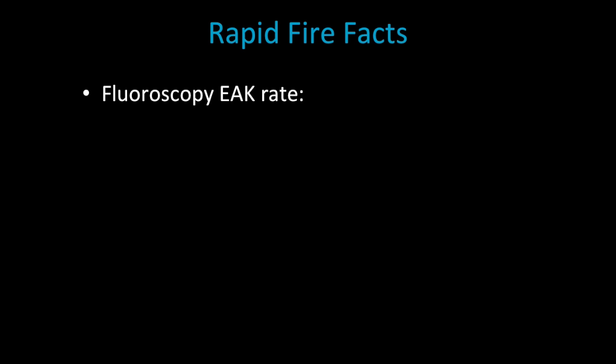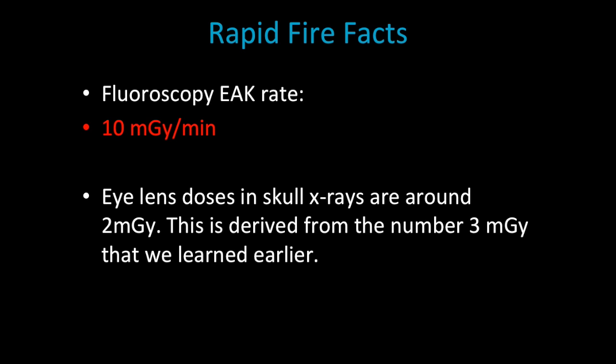The fluoroscopy air kerma rate is 10 milligrays per minute, and that's a rate and you should know that number. The eye lens dose is about two milligrays for a skull radiograph. Remember we said for an abdominal radiograph we have three milligrays delivered, and when we go to a skull radiograph and we calculate the eye lens dose, it's going to be in the range of two milligrays.